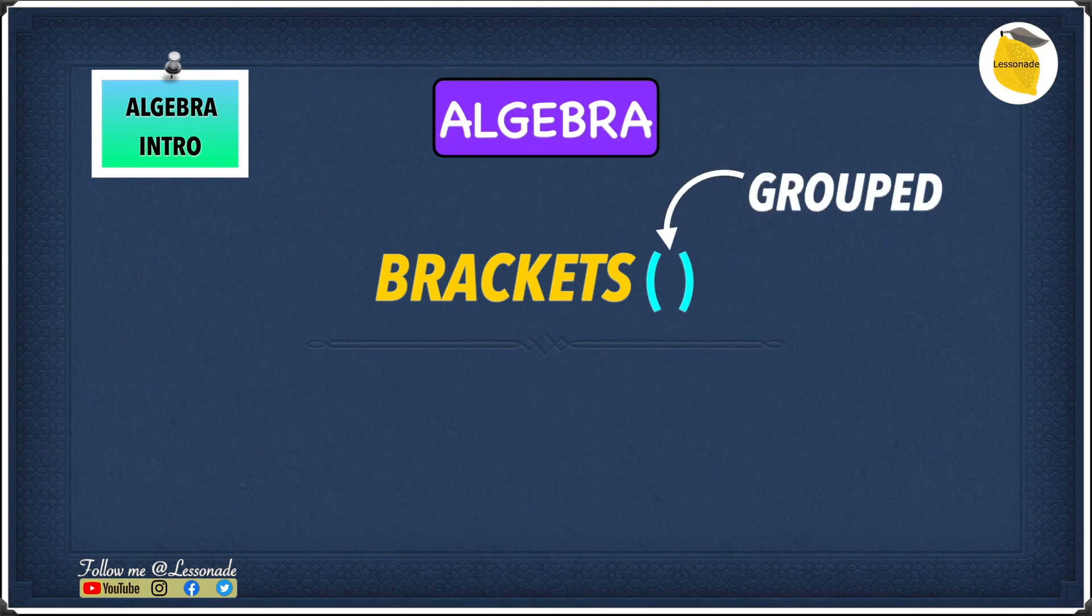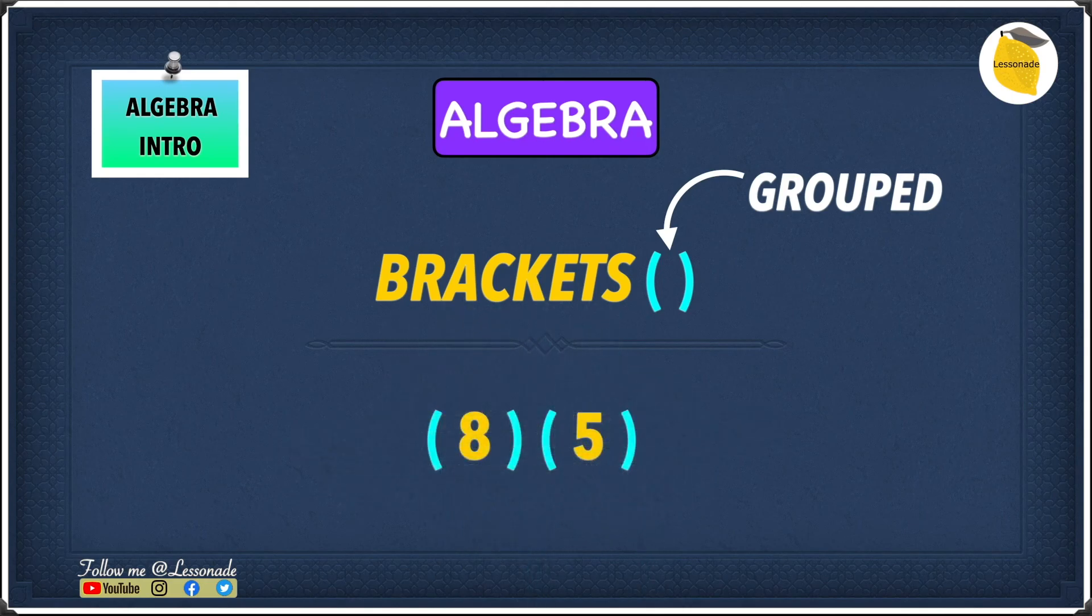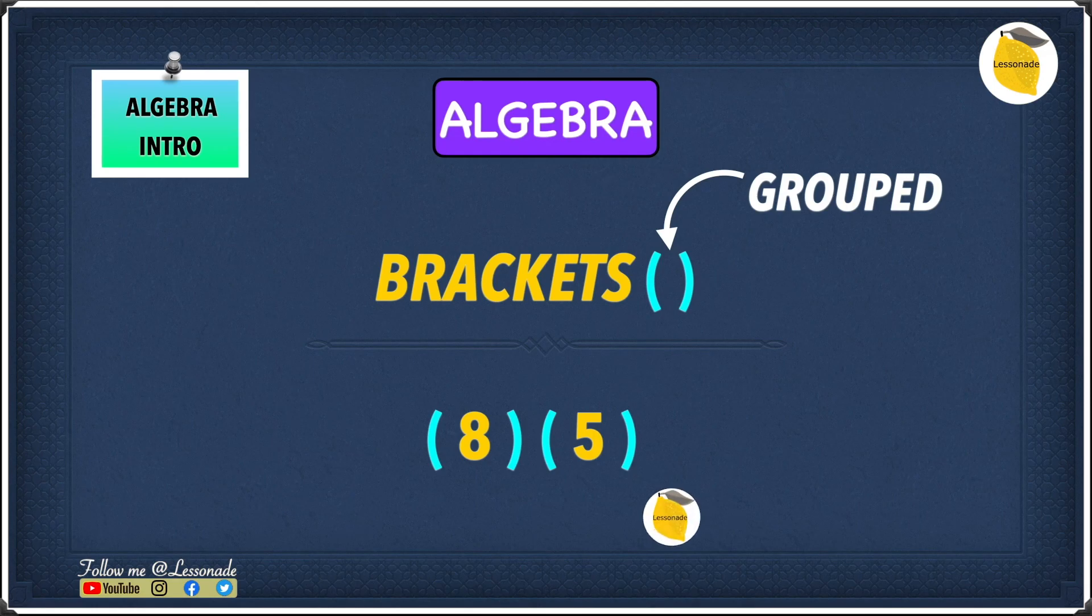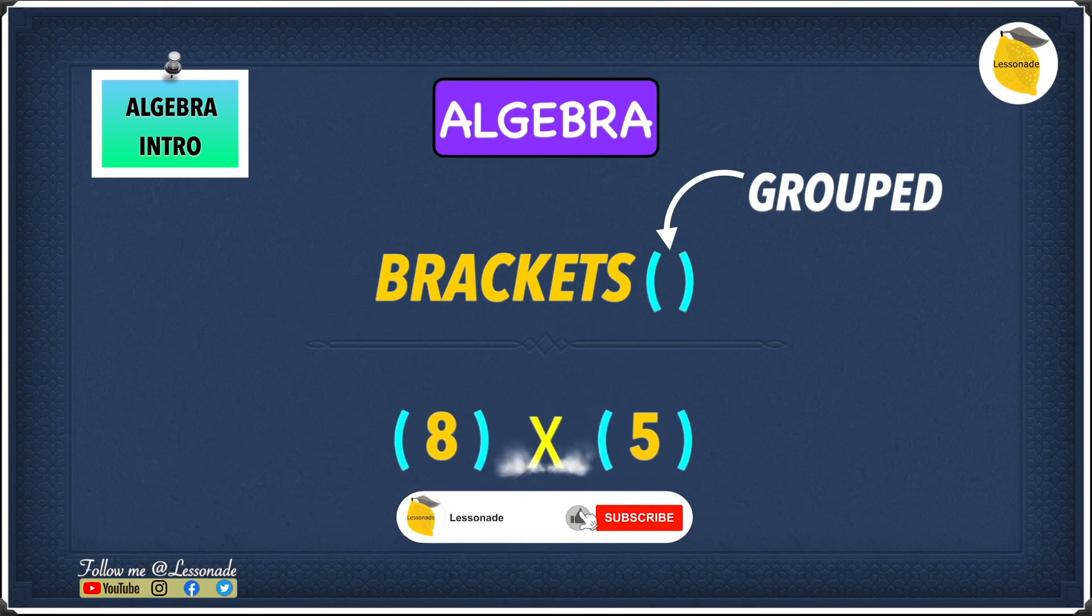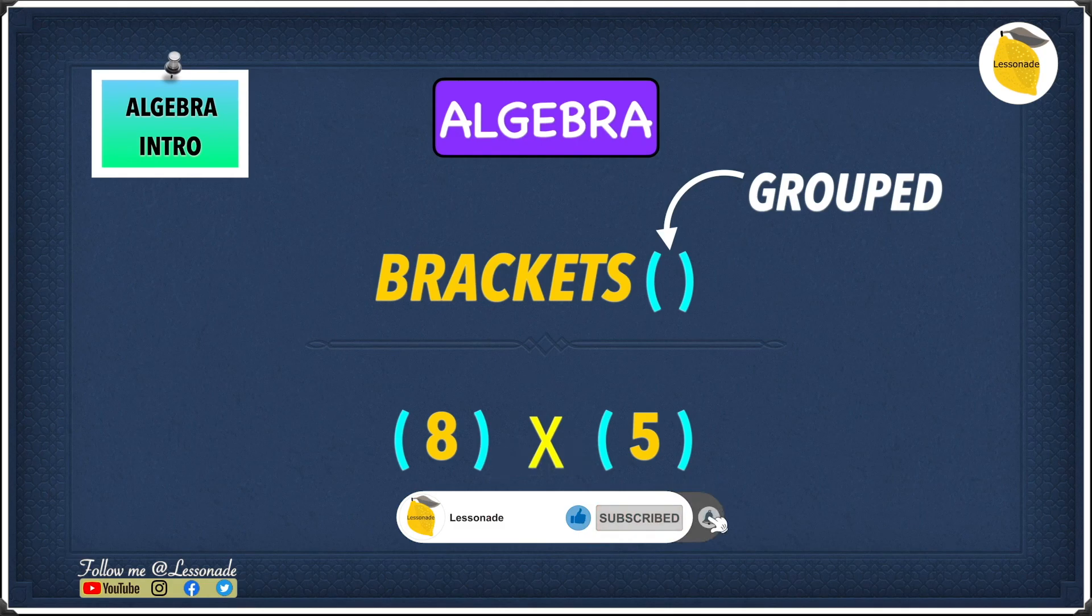And when you have two groups next to each other with no arithmetic symbol in between them, it automatically becomes a multiplication. So 8 times 5. And that's how you multiply numbers with no multiplication symbol in between them.